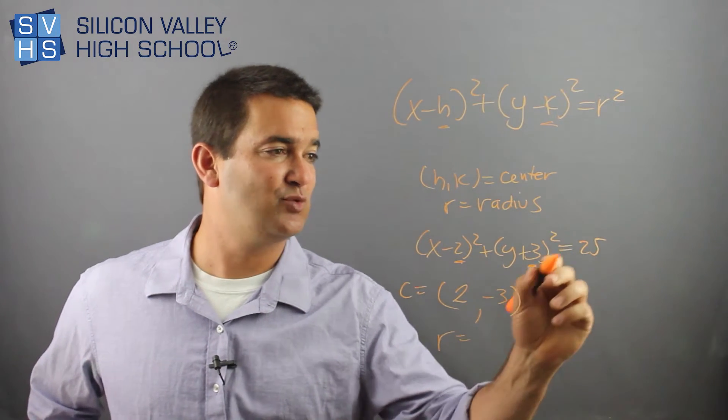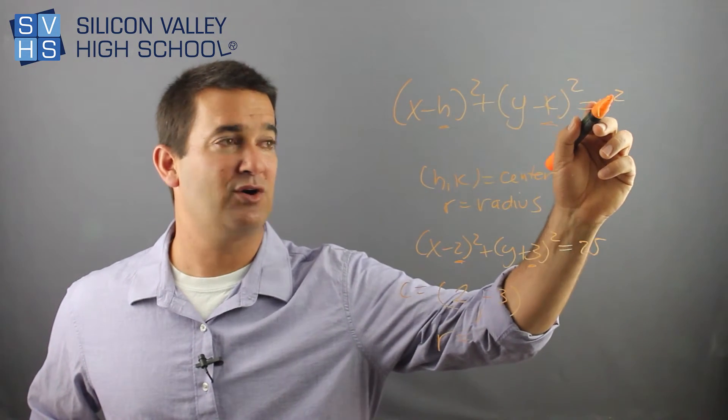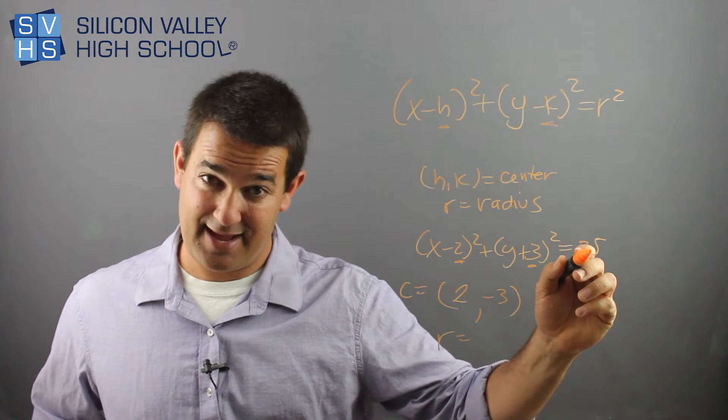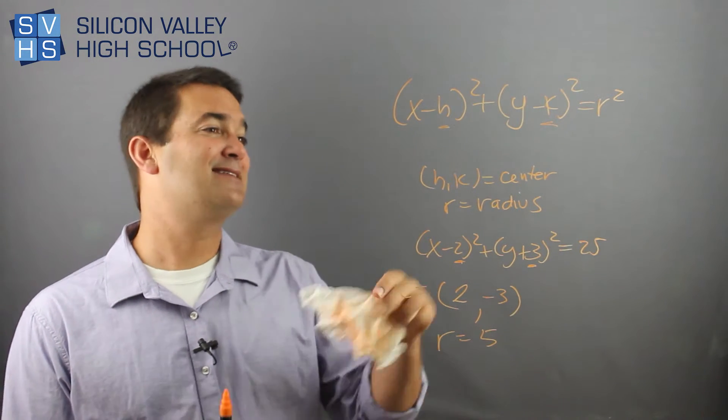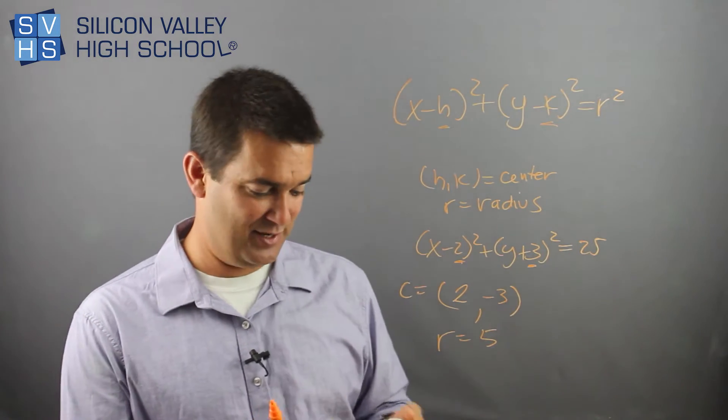And then your radius is not 25. Remember, this equals r squared. So you'd have to root that. So your radius is actually 5. Cool? So that is like the world's most common question.